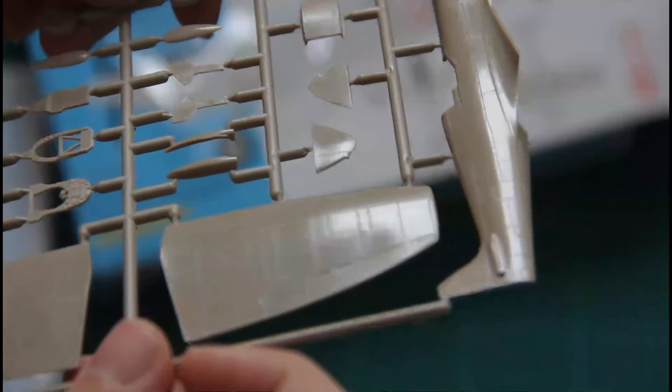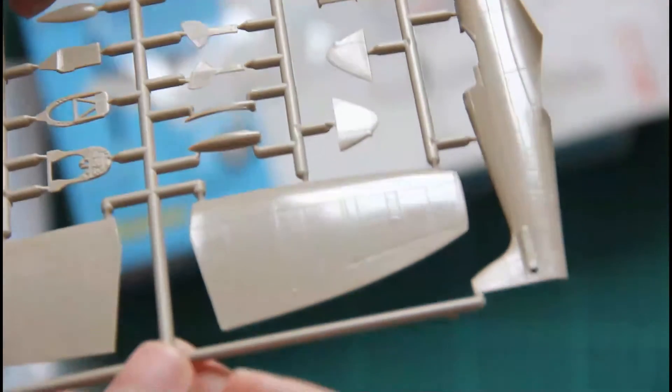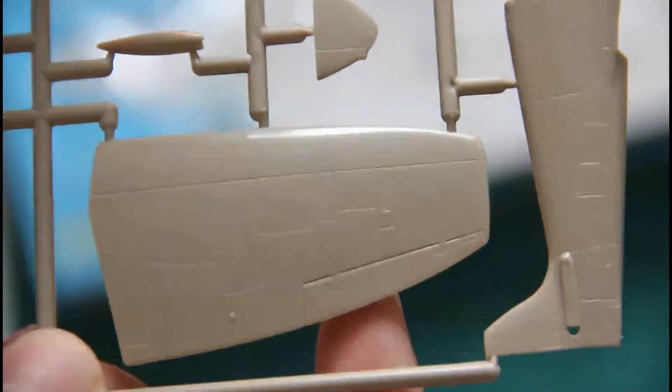And as you can see, recessed panel lines and rivets in some places are still present. That's good detailization for the 72nd scale kit. Now we see it a bit more properly.